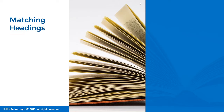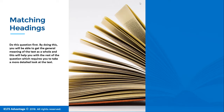Here's some general advice before we look at the actual questions. Do this question first — I mean if matching headings is in part two or part three of the reading test alongside multiple choice or true/false/not given, do the matching headings one first. By doing this, you'll be able to get the general meaning of the text as a whole, and this will help you with the rest of the questions which require a more detailed look at the text. It's a lot more difficult to look at the detail first and then the general meaning, so if you do see this question, do it first.